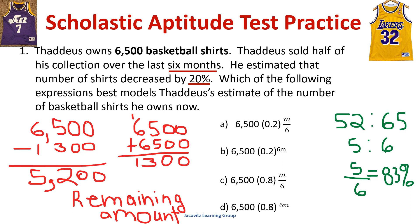Let's look at this and try to figure it out. We changed the name on the problem, but anyway: Thaddeus owns 6,500 basketball shirts. Thaddeus sold half of his collection over the last six months, and he estimated that the number of shirts decreased by 20%. Which of the following expressions best models Thaddeus' estimate of the number of basketball shirts he owns?